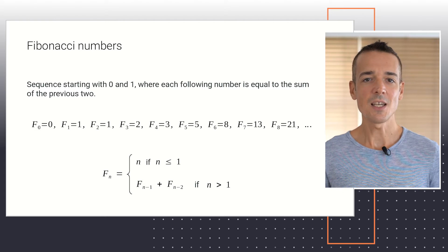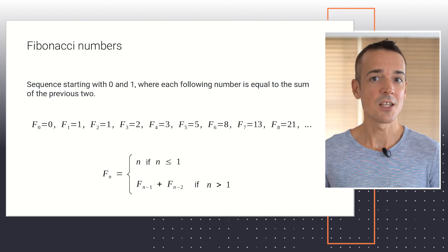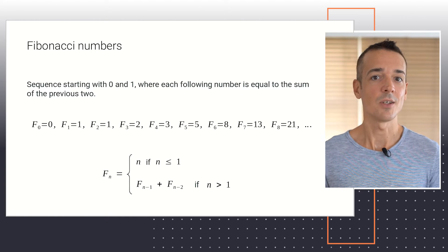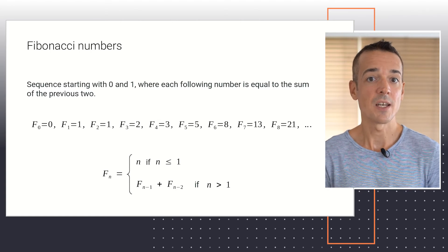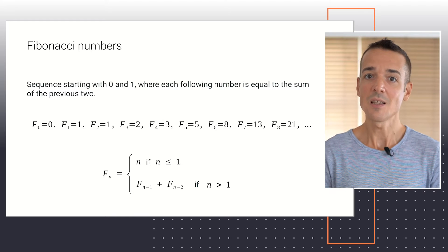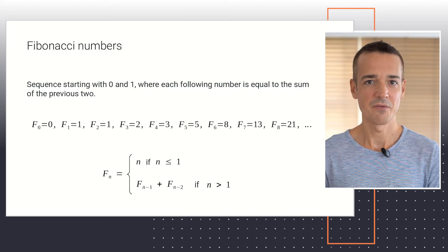As you can see, this definition qualifies as recursive, because the operation being defined, the calculation of the Fibonacci number for a given index n, appears in the body of the definition itself. Now, our goal as Python programmers can be defined as follows. Can we write a Python function called Fibonacci that takes a number n as an input and returns the nth number in the sequence?